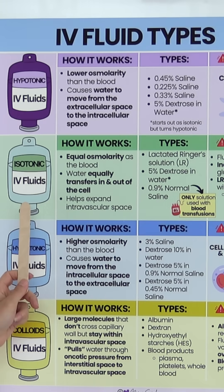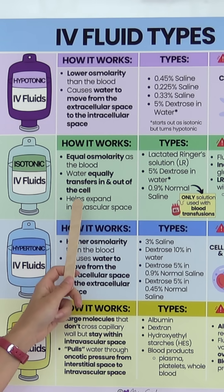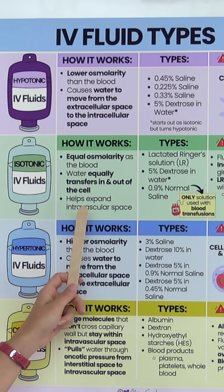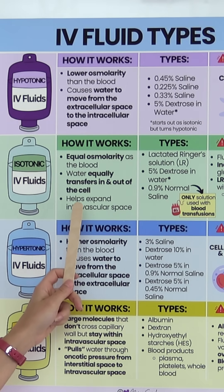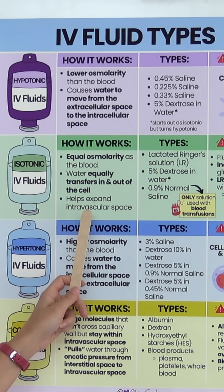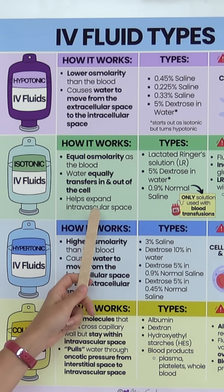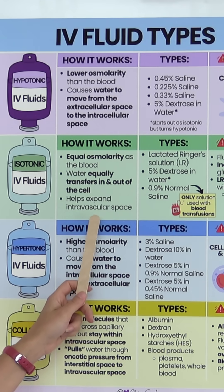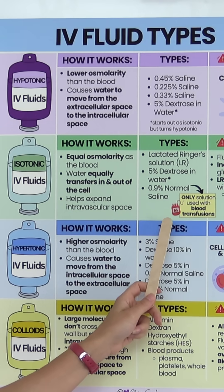Then we have isotonic IV fluids. Iso means equal, therefore they have an equal osmolarity as the blood. It's going to cause water to equally transfer in and out of the cell, which is going to help expand the intravascular space.